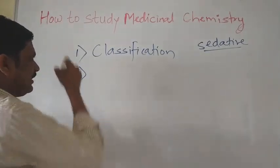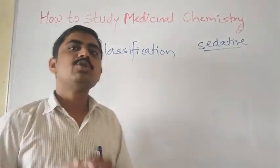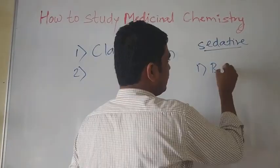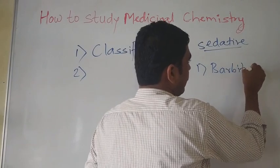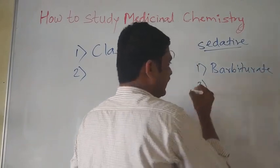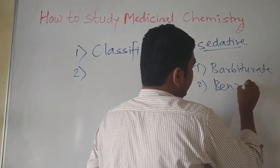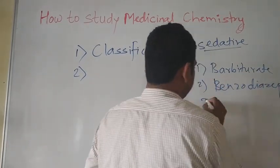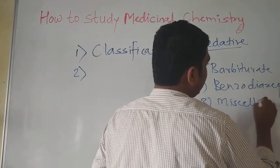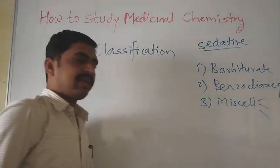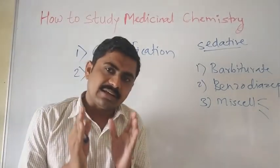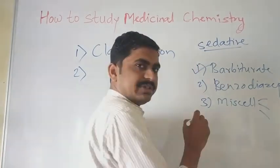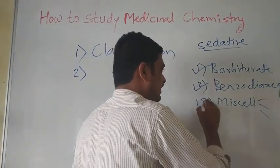After classification, you should study each individual class. For example, sedatives and hypnotics are classified into three classes: the first class is barbiturates, the second class is benzodiazepines, and the third class is miscellaneous agents, which contains various subclasses. So first study the classification, then study one class at a time — first barbiturates, then benzodiazepines, then miscellaneous agents.